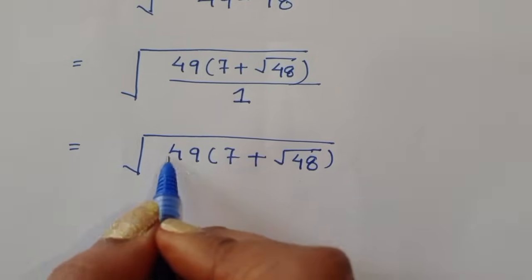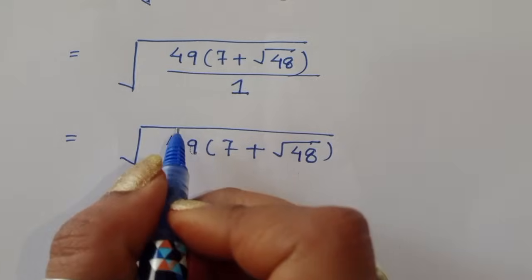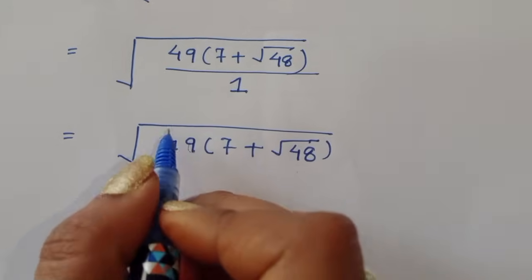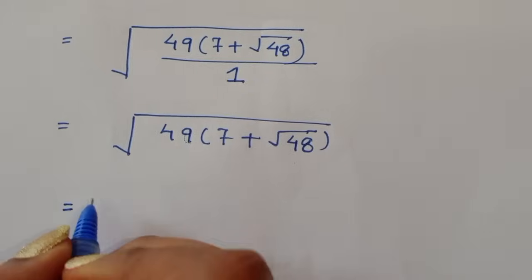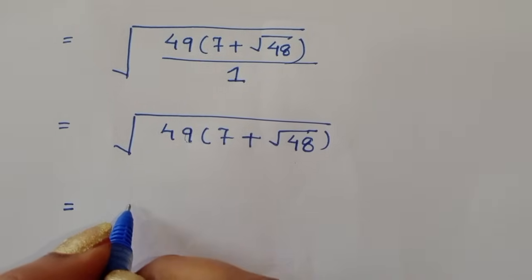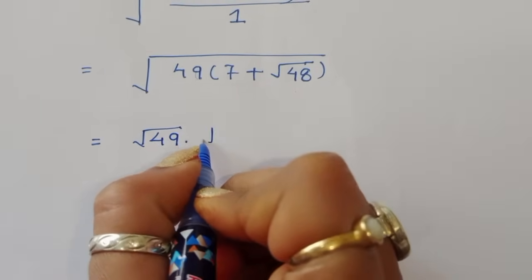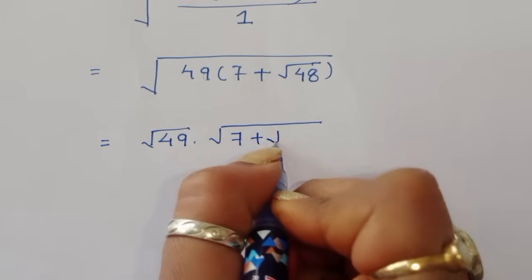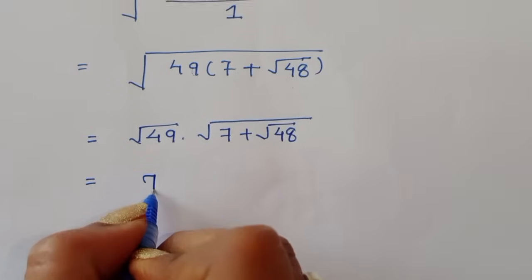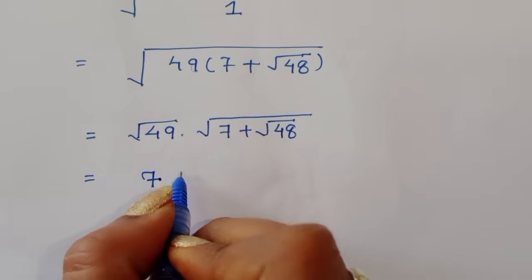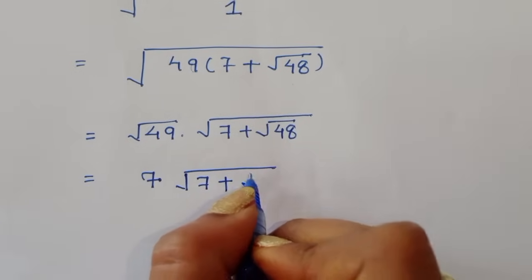So we can write this as square root of 49 times 7 plus square root of 48. Now, square root of 49 — taking this term, square root of 49 is 7. So the square cancels from the square root, and we get 7 outside. We can write this as 7 times square root of 7 plus square root of 48.